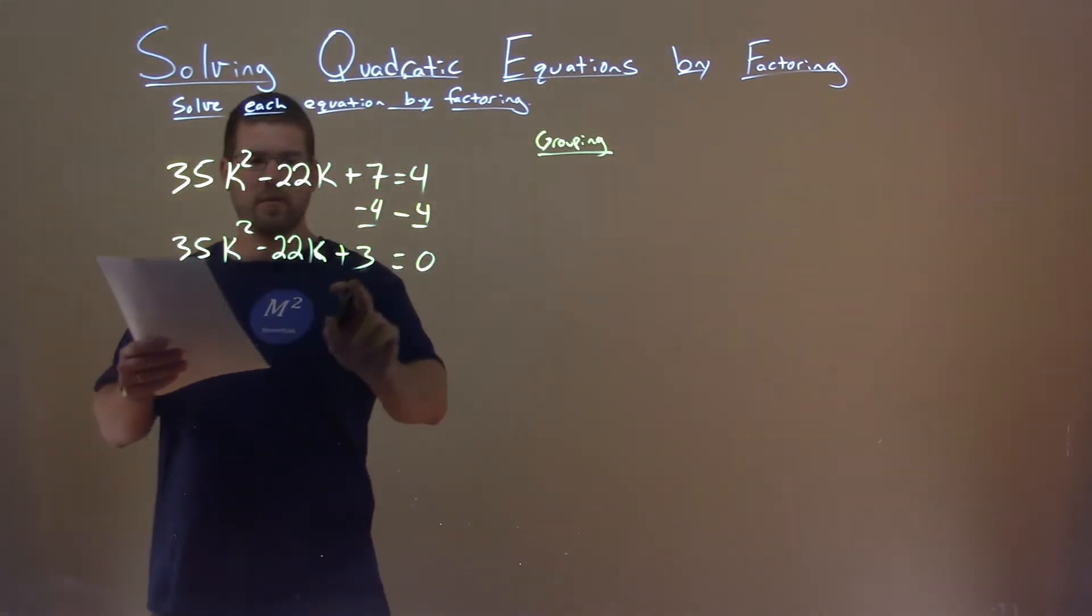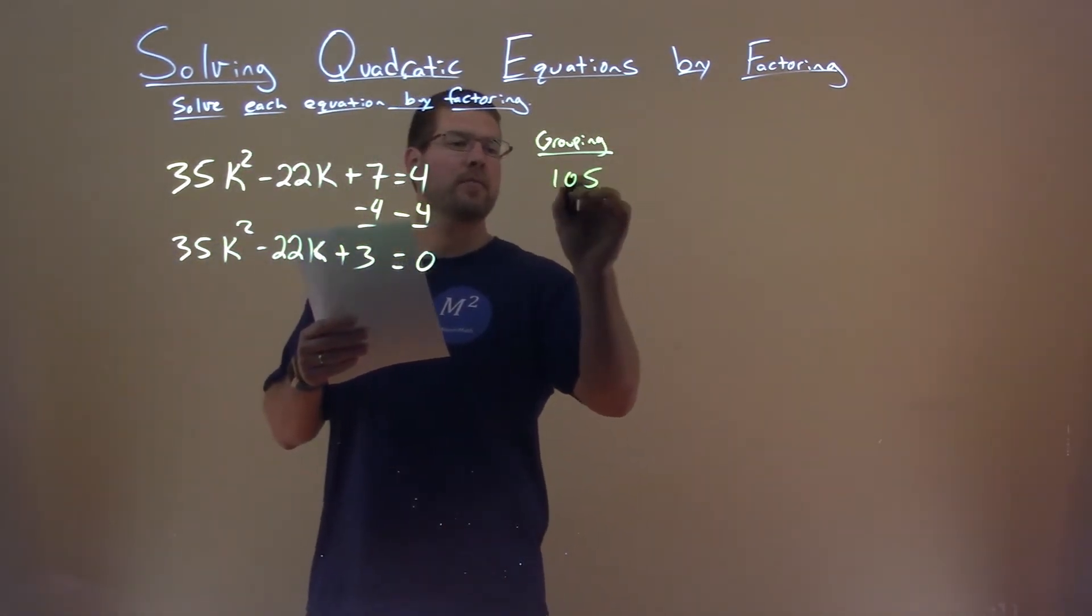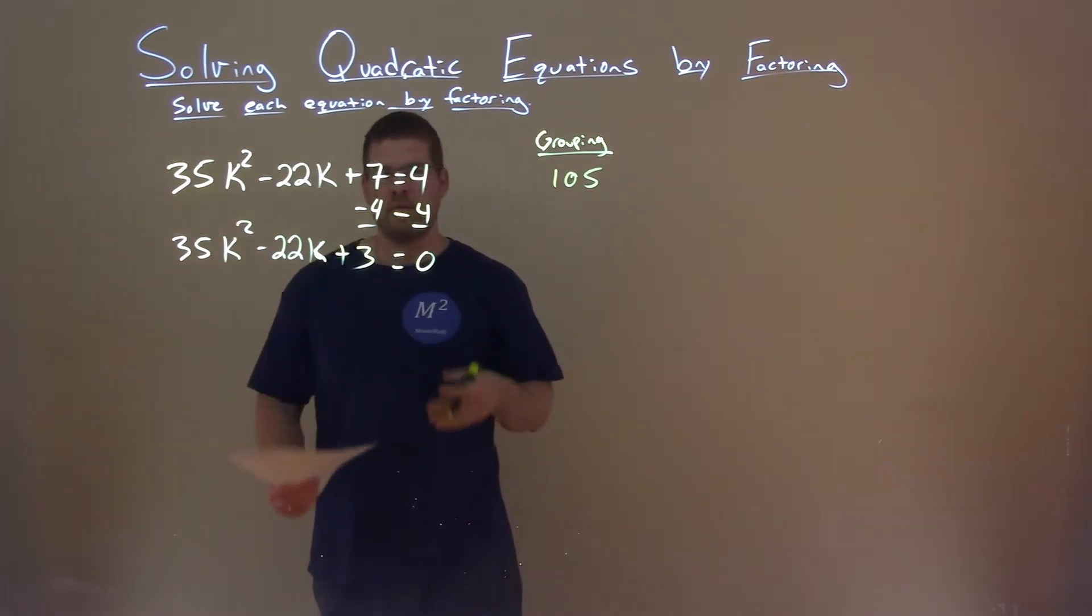So I'm taking 35 multiplied by 3, and that gets me 105. Well, I'm not going to go through all the factors of 105. Well, maybe I will.